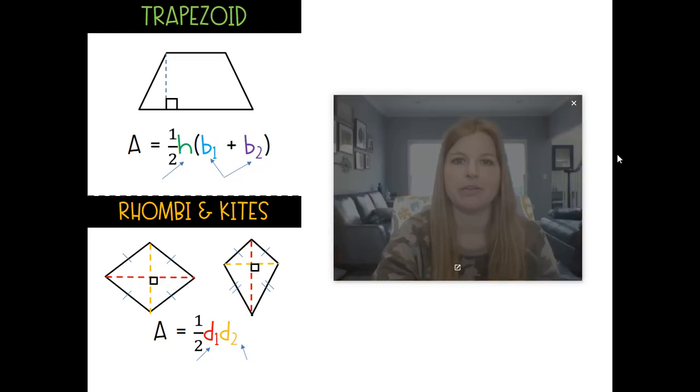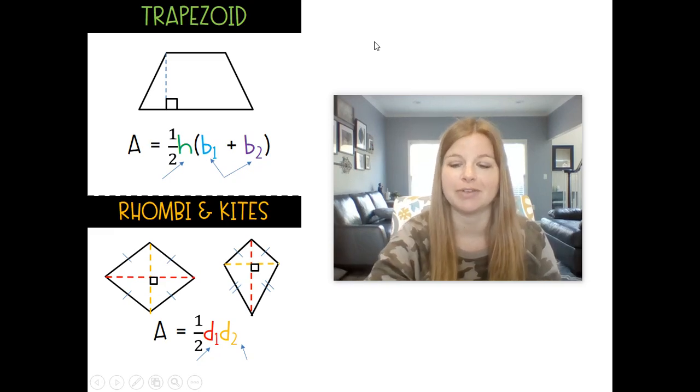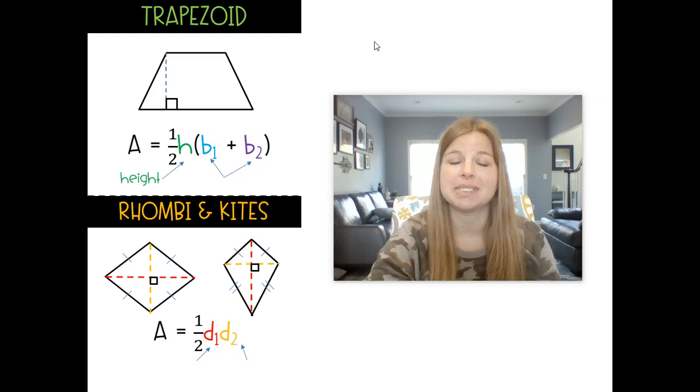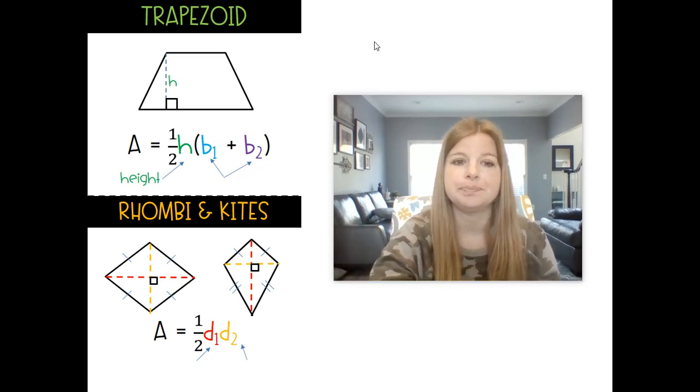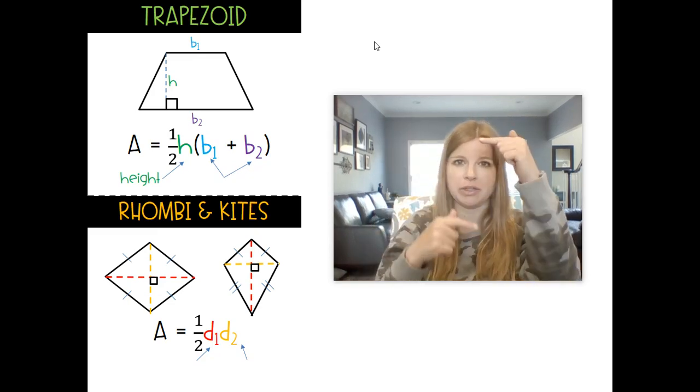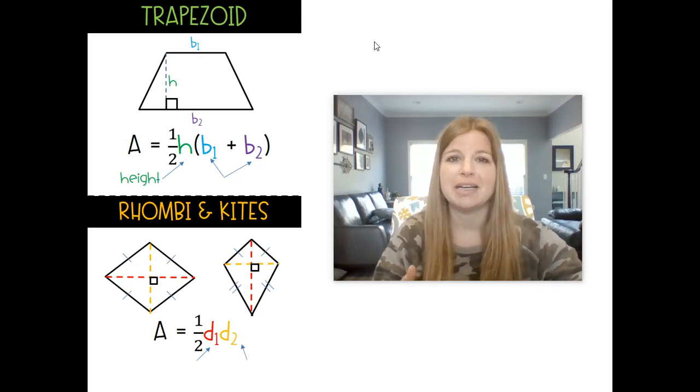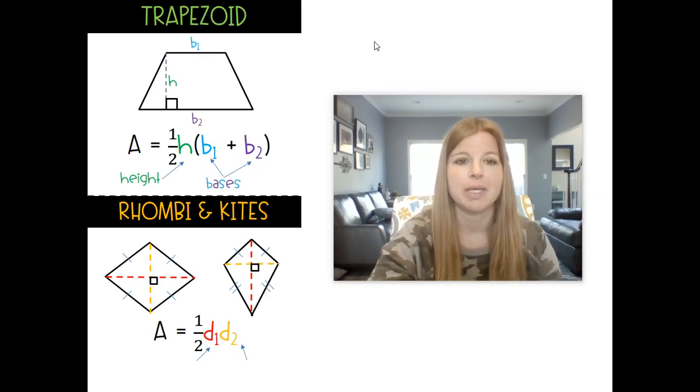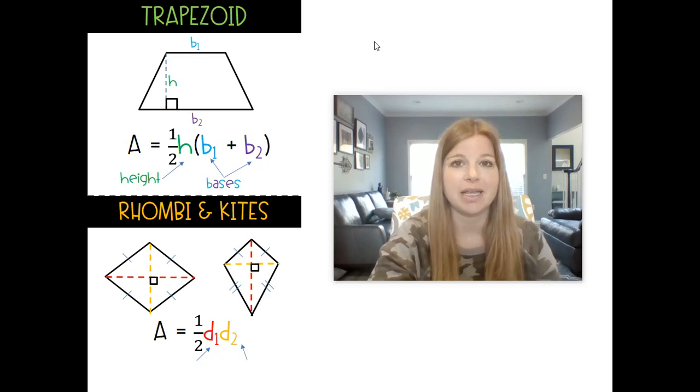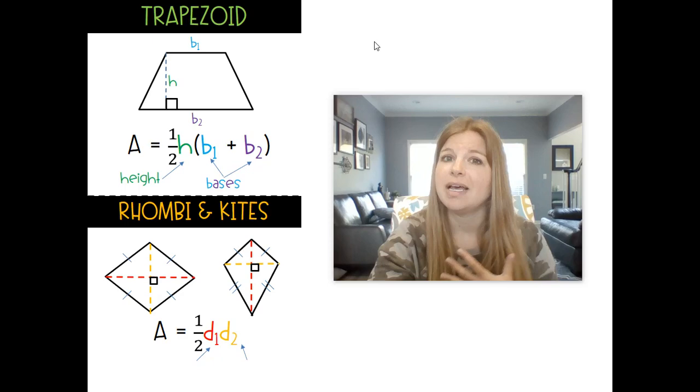So first of all, for a trapezoid, the formula is: area equals one half times the height h. That's where the height would be. We already know the height is always the altitude, the altitude is always created at a 90 degree angle and it's perpendicular to the base. And we have two bases, base 1 and base 2, b1 and b2. It doesn't matter—b1 and b2 are interchangeable as far as their location goes. B1 doesn't have to be the smaller base or the larger base, it doesn't really matter, but they're just both bases.